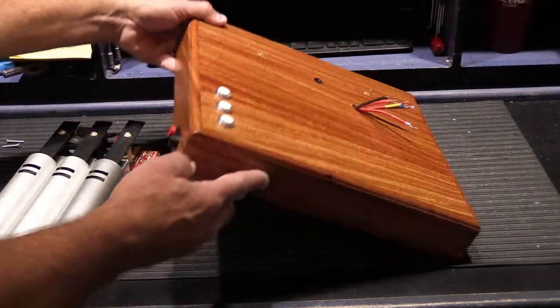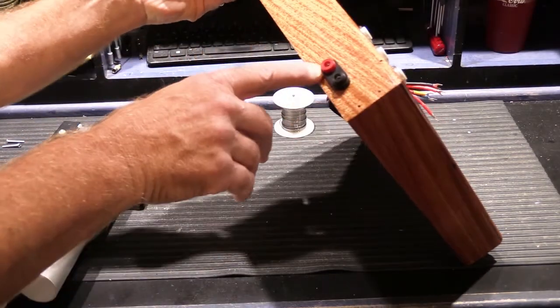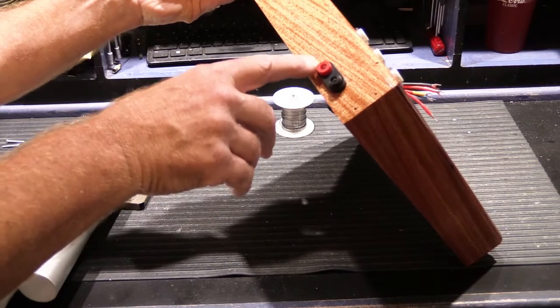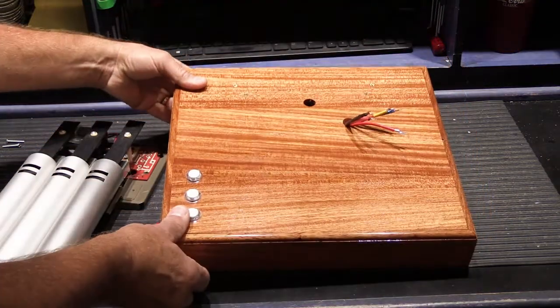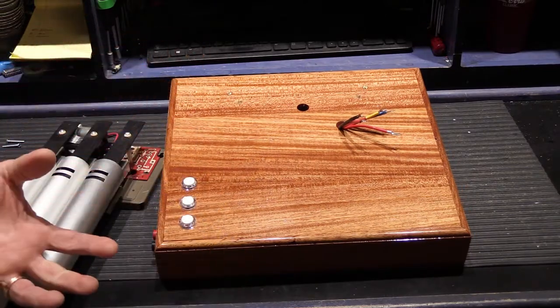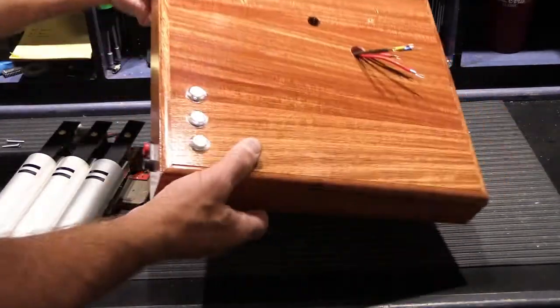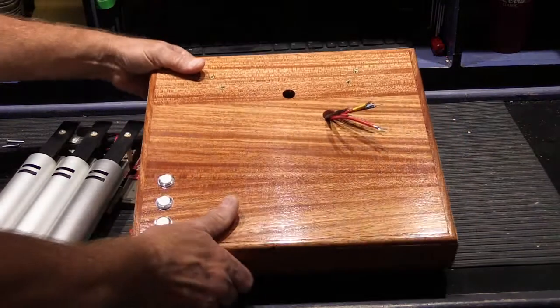And then here on the edge we have an input jack. This is where our transformer connection will go. That way I don't have cords hanging out of it all the time. It's a nice sort of self-contained unit. It's kind of heavy, which I like.